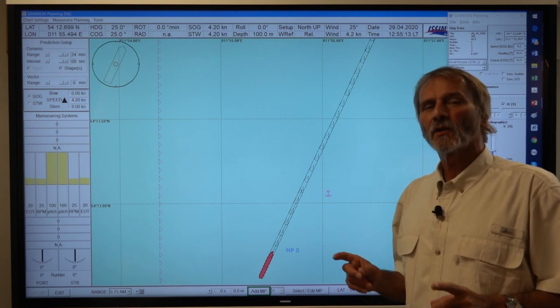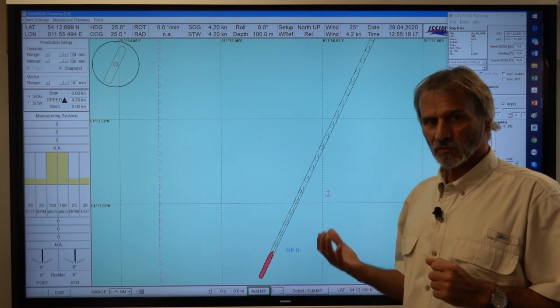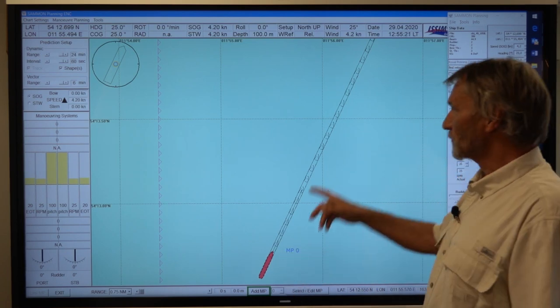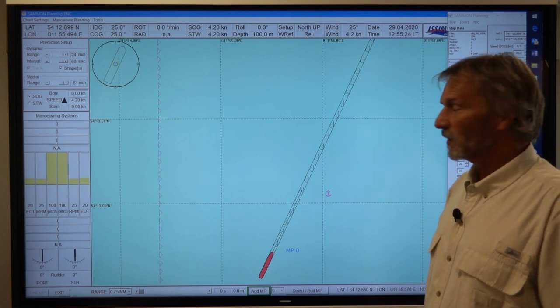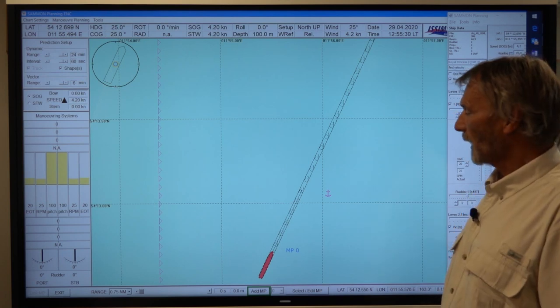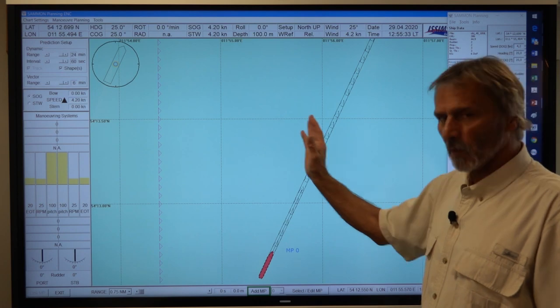What I would like to demonstrate now is the effect of drift angle onto the ship motion. This ship is not drifting, it's going straight and it's going with 4.2 knots, engine order setting 20 and what we want to achieve is to bring the ship in a drift motion.